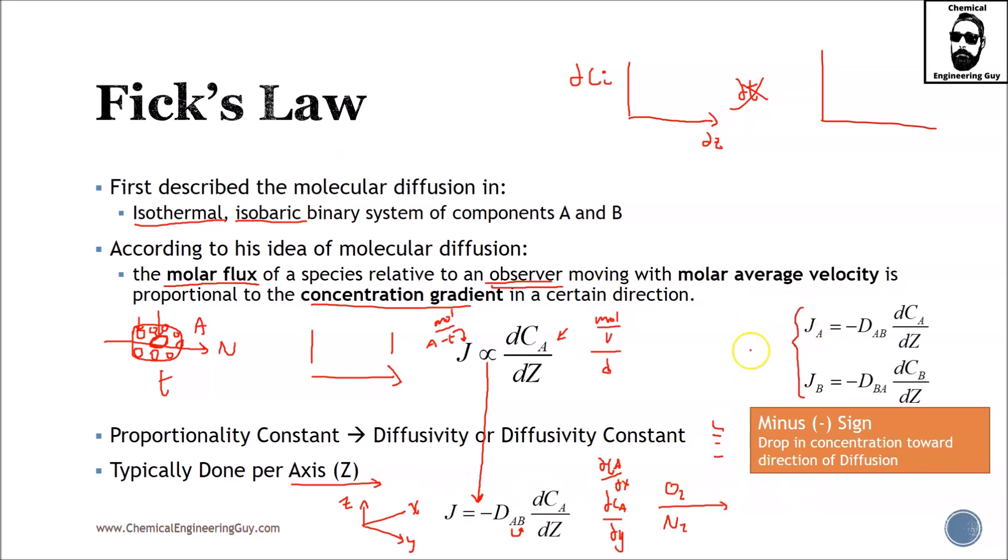Anyways, talking about the specific case of, I don't know, a simple case, we have A here, we have B here. If we were to measure the flow of A, we go from left to right, you can use this expression. Why do we use a negative sign? Because we have a drop in concentration, meaning that actually, if you measure, I don't know, point A and point B...